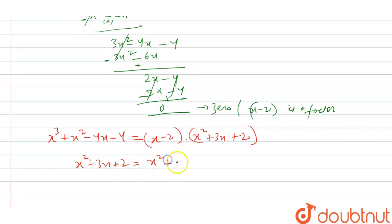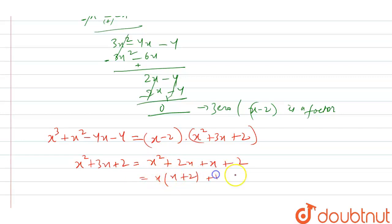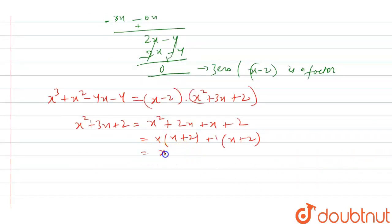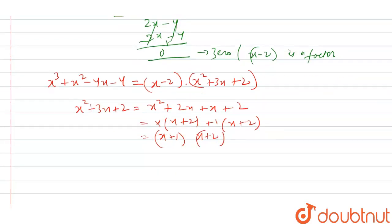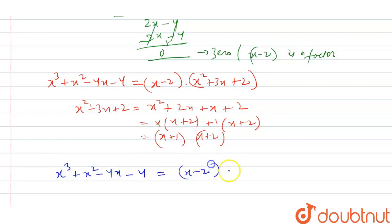x² + 3x + 2 can be written as x² + 2x + x + 2. Taking x common gives x(x + 2), and taking 1 common from the remaining gives (x + 2). So this factors as (x + 1)(x + 2). Therefore, x³ + x² − 4x − 4 = (x − 2)(x + 2)(x + 1).